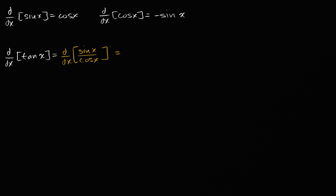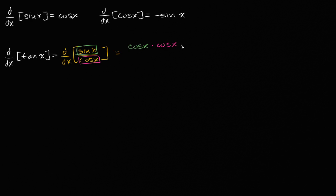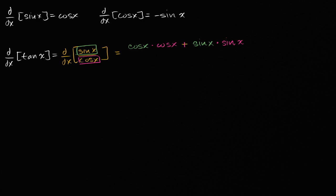The quotient rule tells us that this is going to be the derivative of the top function, which we know is cosine of x, times the bottom function cosine of x, minus the top function sine of x times the derivative of the bottom function. The derivative of cosine of x is negative sine of x, so the negative cancels out, and it's all over the bottom function squared, cosine squared of x.